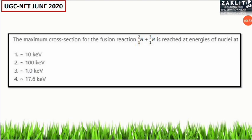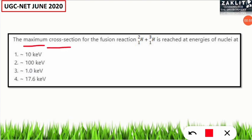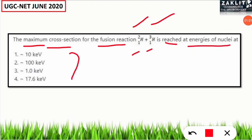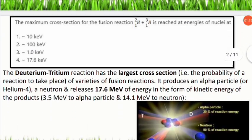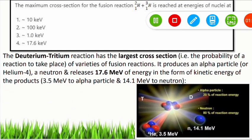The first question, which was very confusing, was related to the fusion reaction. Most students got this wrong, though some answered correctly. The question was: the maximum cross-section for the fusion reaction of deuterium and tritium is reached at energies of nuclei at which kilo electron volt? Most students selected option four — approximately 17.6 keV.